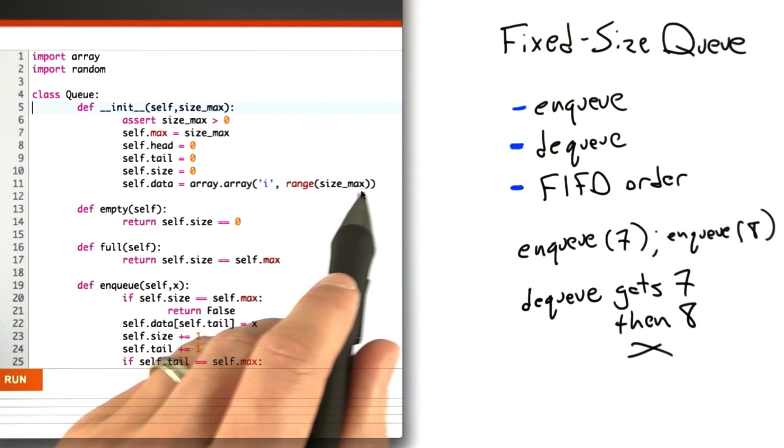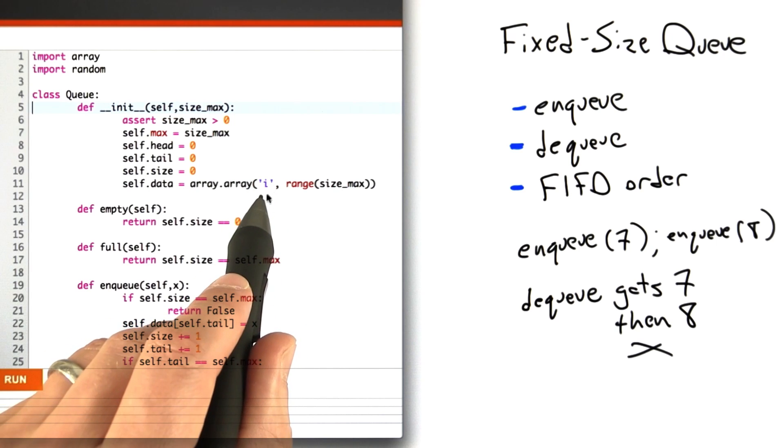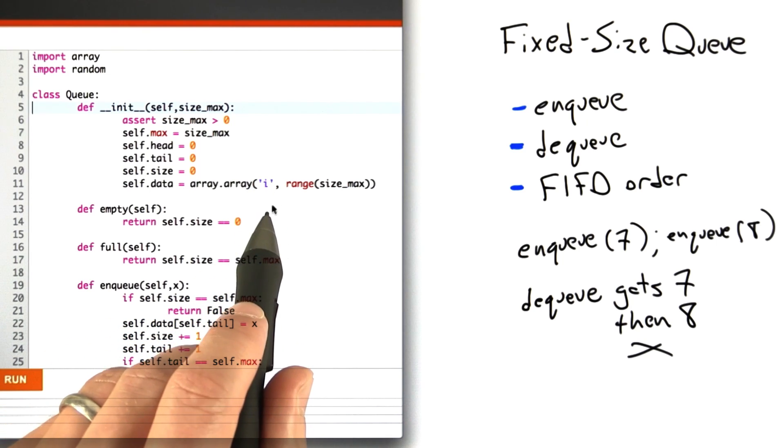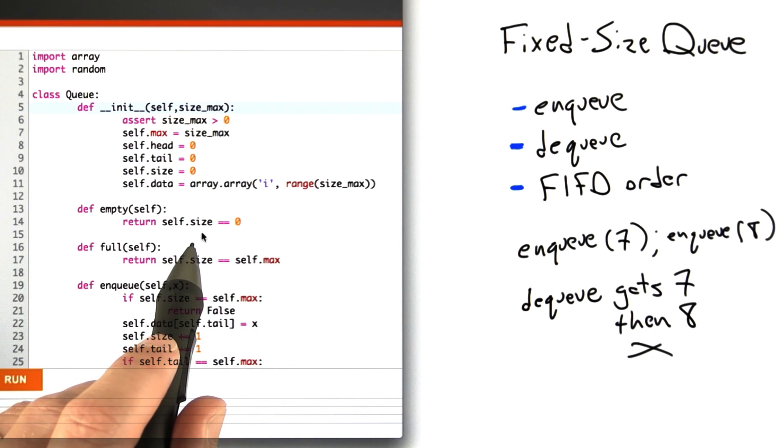By allocating a fixed-size storage region of statically typed memory—here the 'i' means our queue is only going to store integers—we can avoid some of Python's dynamic checks that make the queue slow.